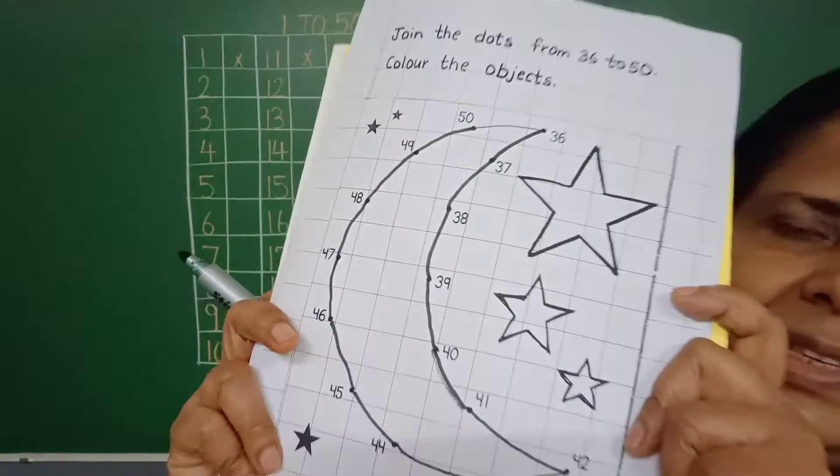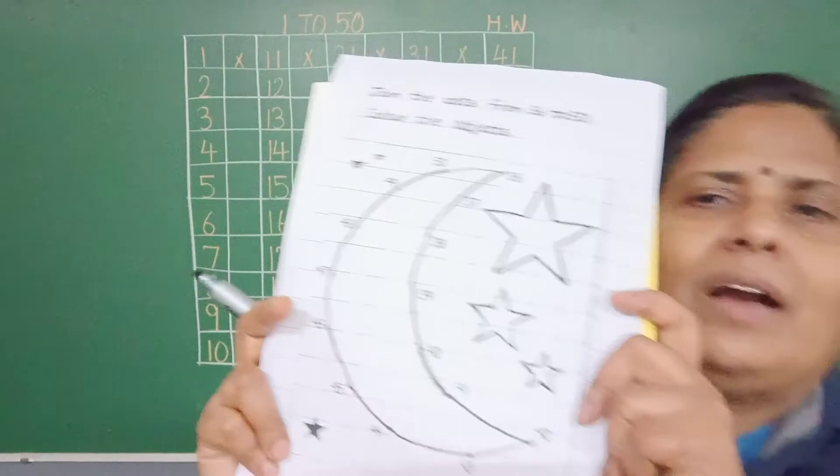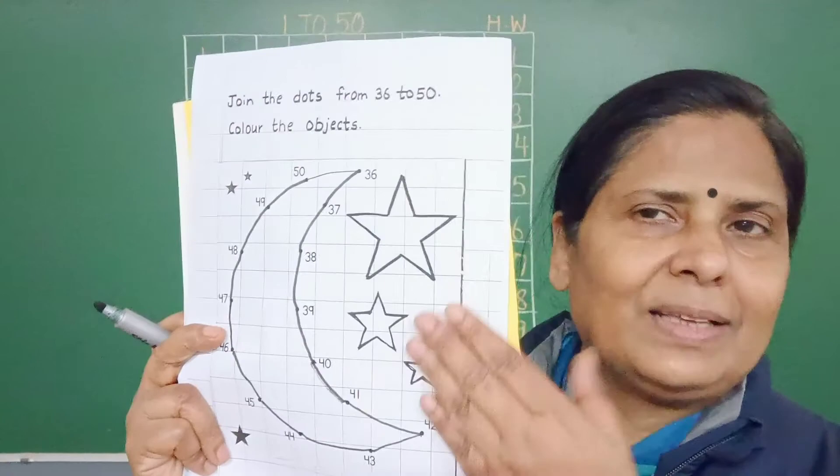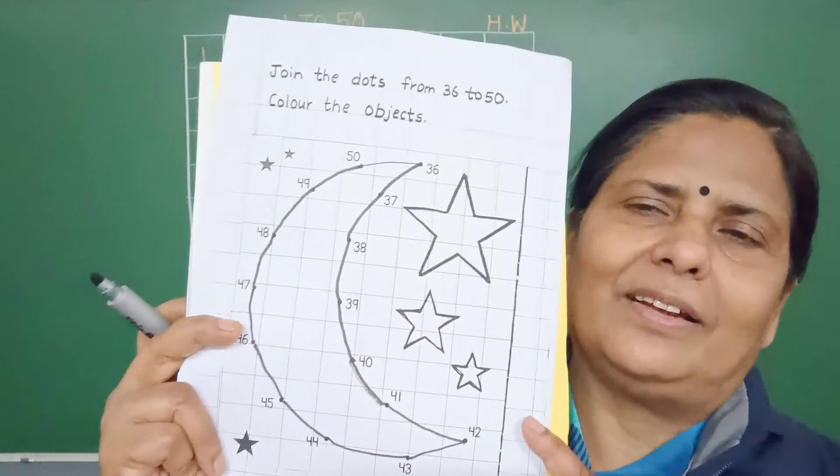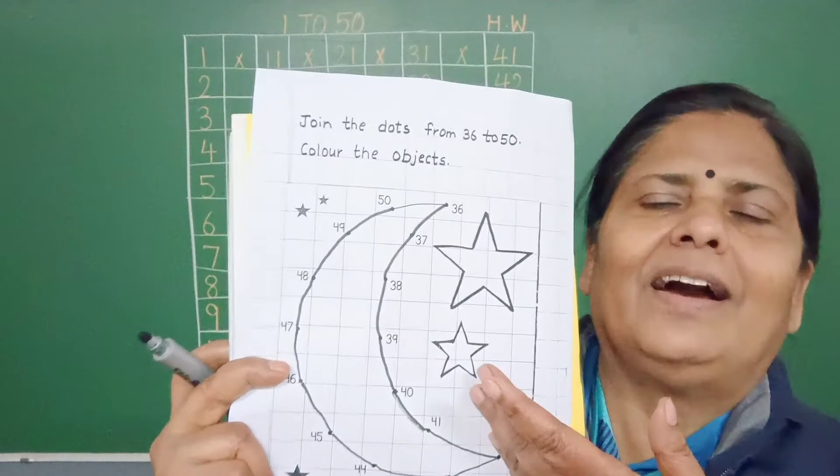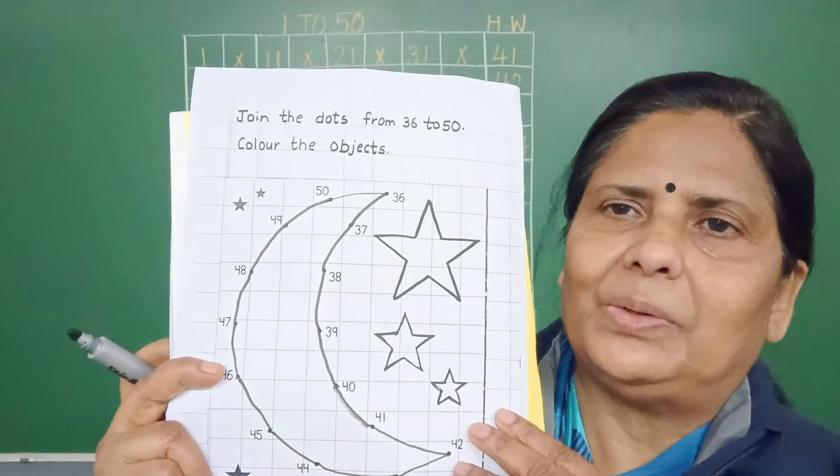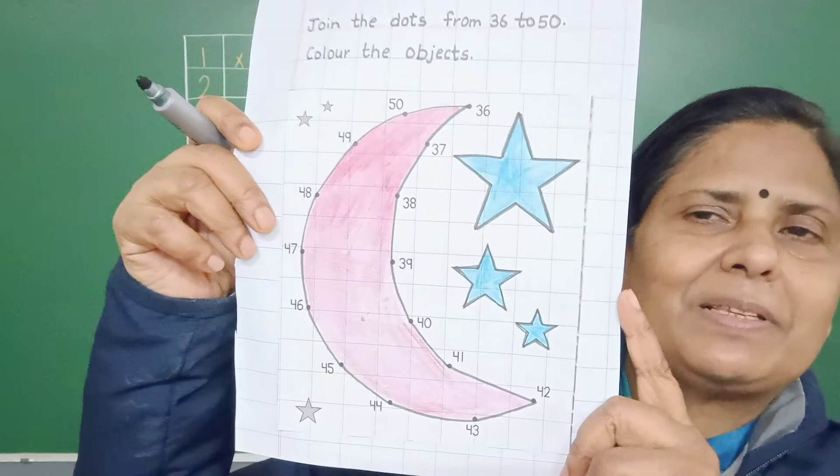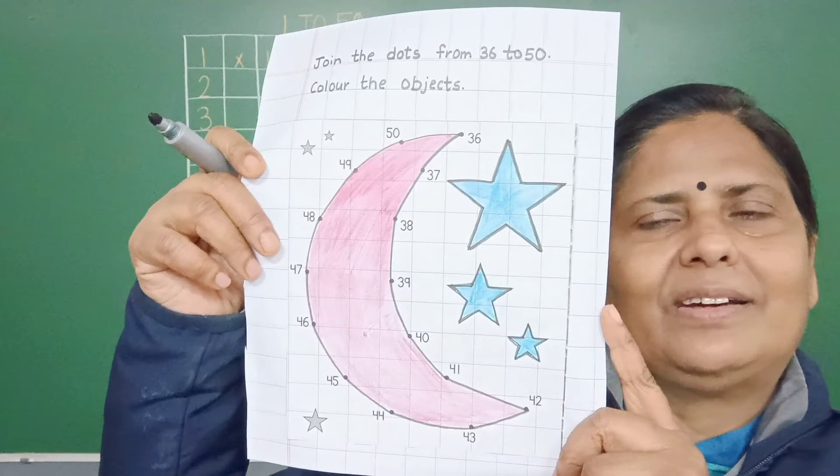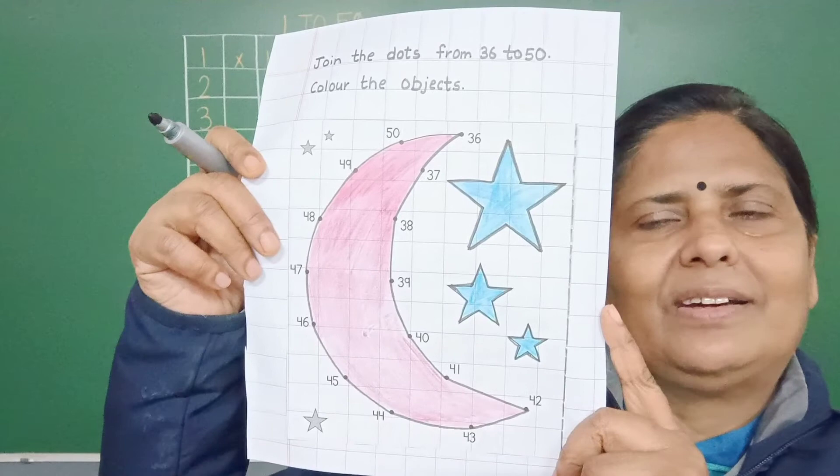Now you have to color the stars and moon. This is your star. You can color your own choice. Blue, red, orange, any choice. I liked red color and blue color, so I colored the stars blue and the moon red. You will do this activity in your notebook.